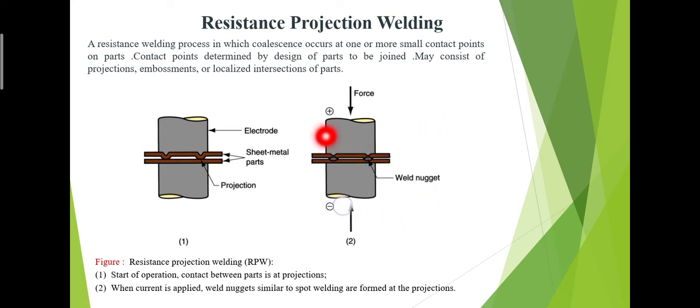If we want to talk about advantages of projection welding, then we can say that a number of welds can be made simultaneously. Projection welds can be made in metals that are too thick to be joined by spot welding. Scaling, rust, oil, and work metal coating interferes less with projection welding than with spot welding. Projection welding electrodes possess longer life than spot welding electrodes.